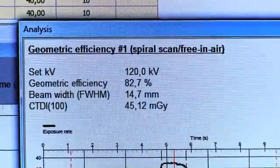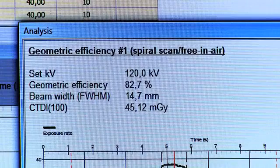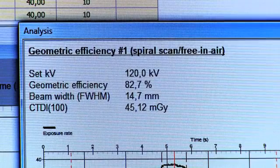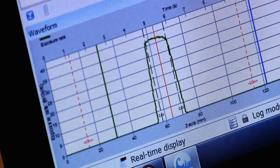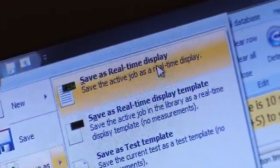The geometric efficiency should be greater than 70% or the CT will issue a warning. The distance between the two black lines is the collimation. Save the data.